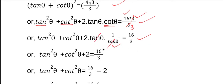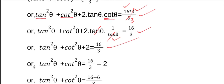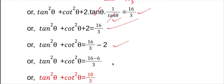Therefore tan²θ plus cot²θ plus 2 equals 16/3. This implies tan²θ plus cot²θ equals 16/3 minus 2. Taking LCM of 3: that is 16 minus 6, all over 3.